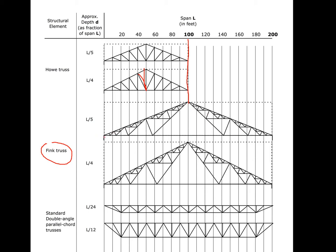One alternative is the Fink truss, which eliminates those long compression members at the center and spans with a series of king posts — slings supporting posts — so the longest compression member is much shorter. Typically a Howe truss goes up to a hundred feet and a Fink truss up to two hundred feet.